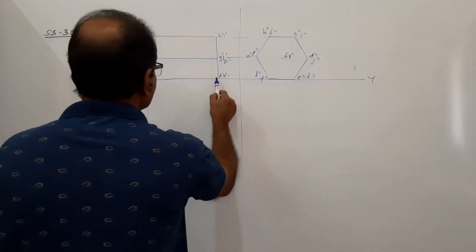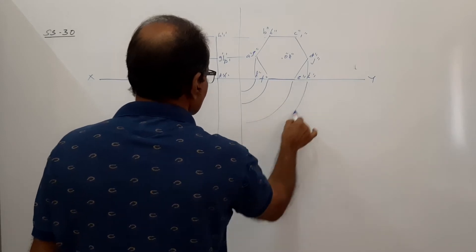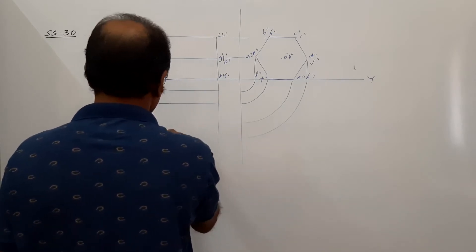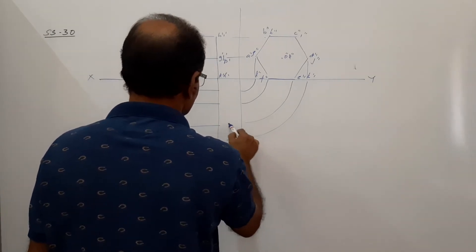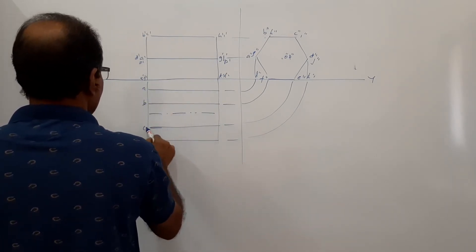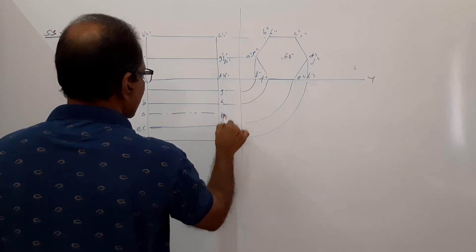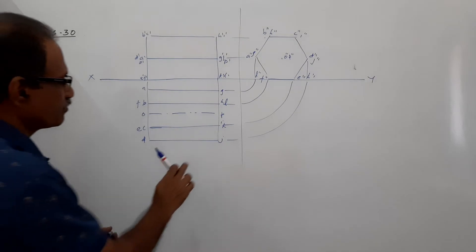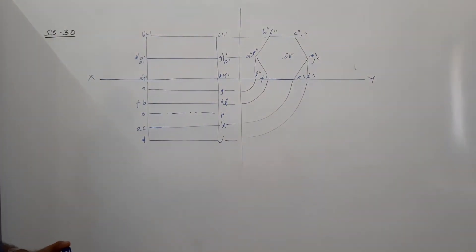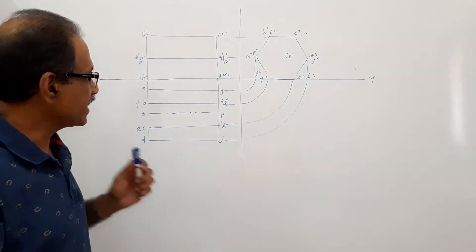Project the plan. Draw a vertical line and project down. Come here and draw arcs. The axis is parallel to VP as well. Now this is cut.